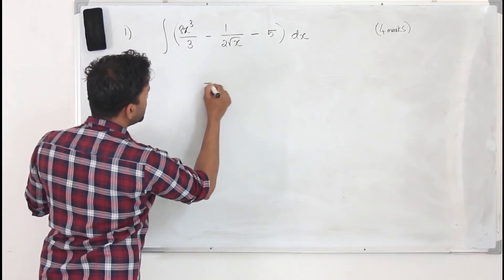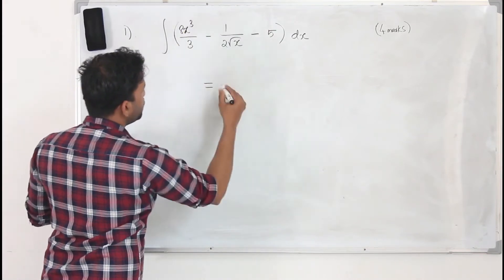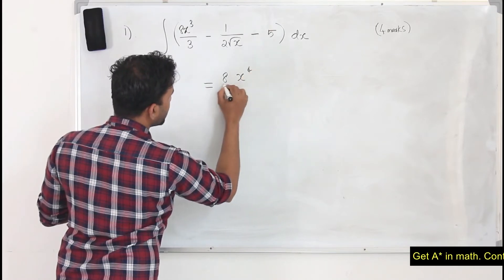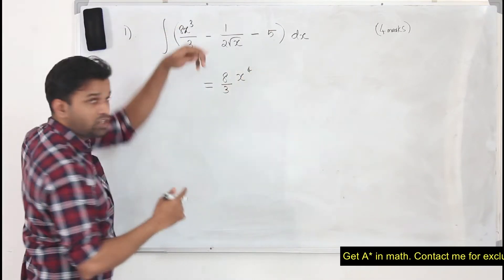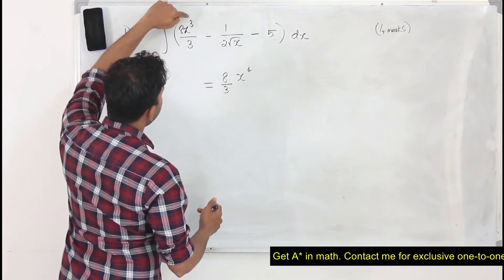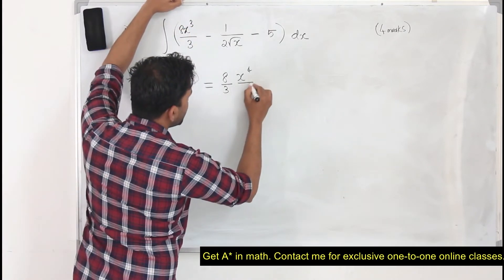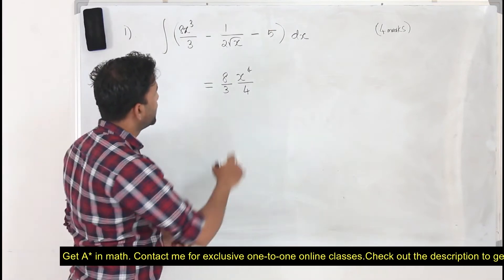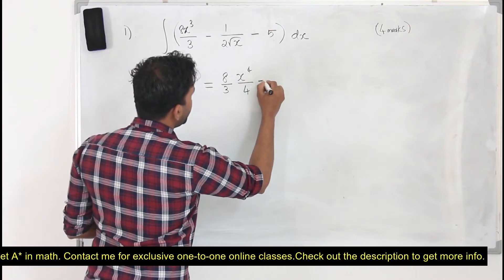Integral equals 8x³. x³ becomes x to the power 4. We take 8 by 3 as it is. 8x³ when you integrate becomes x to the power 4 upon 4. That's the integration of x³.